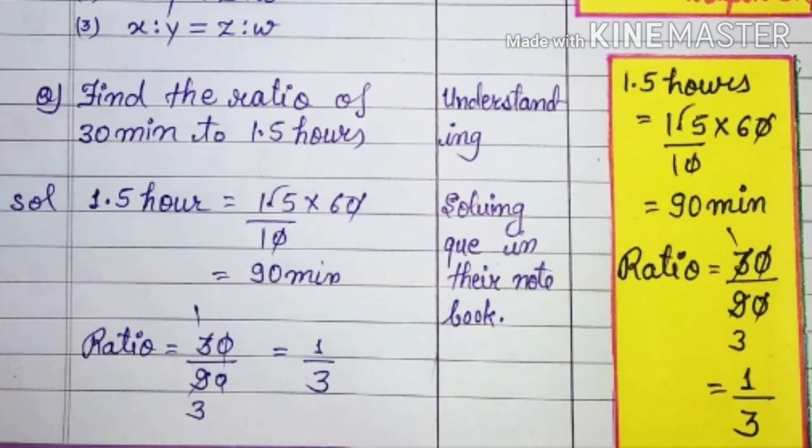We can give some questions in which we understand the ratio. The ratio is always a comparison. It is also a similar quantity. Like here, there are 30 minutes and 1.5 hours. So either we convert 30 minutes into hours, or we convert hours into minutes. It is very easy to convert big units into smaller units. So we have converted 1.5 hours into minutes, which is our 90 minutes. Then we have taken the ratio of 30 by 90, that is 1 by 3.